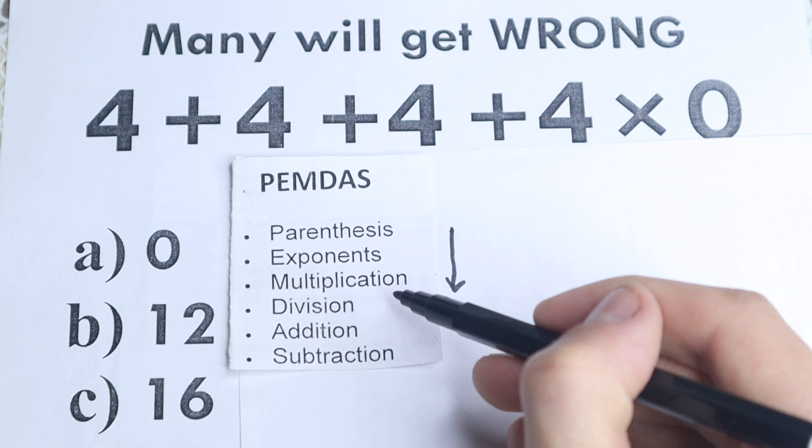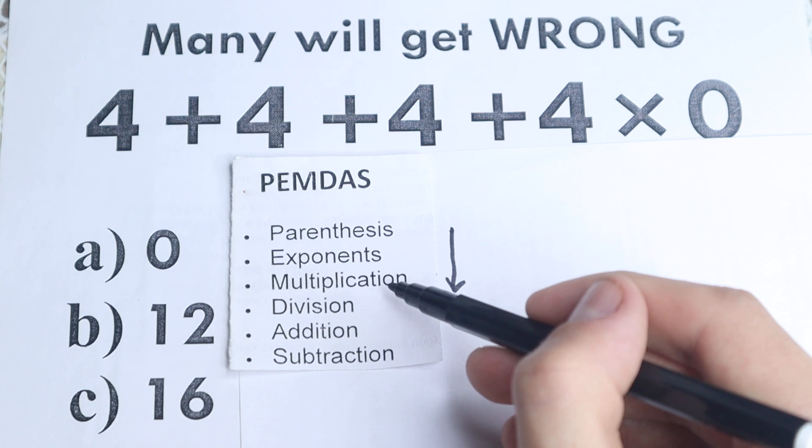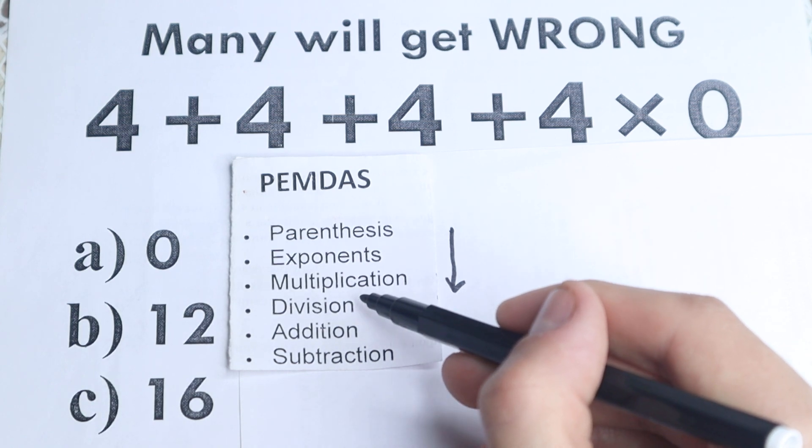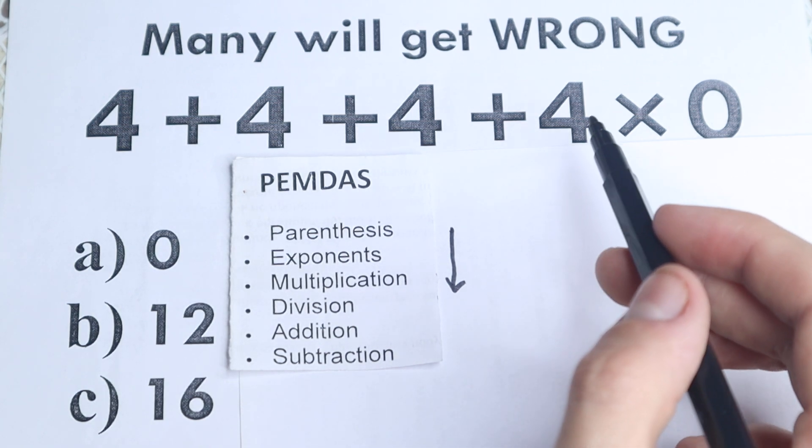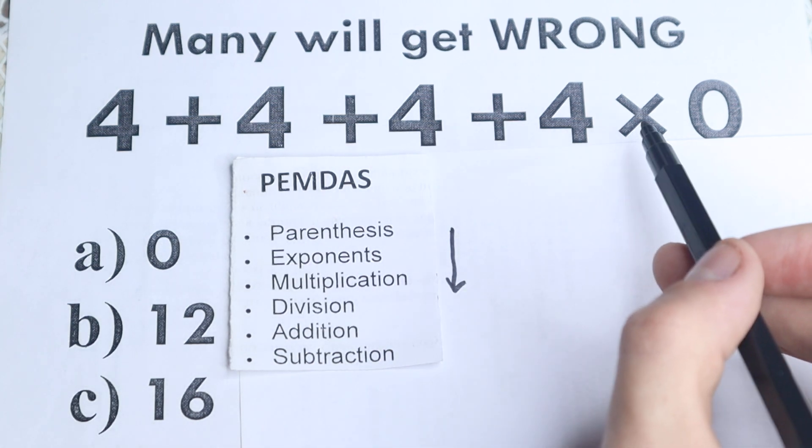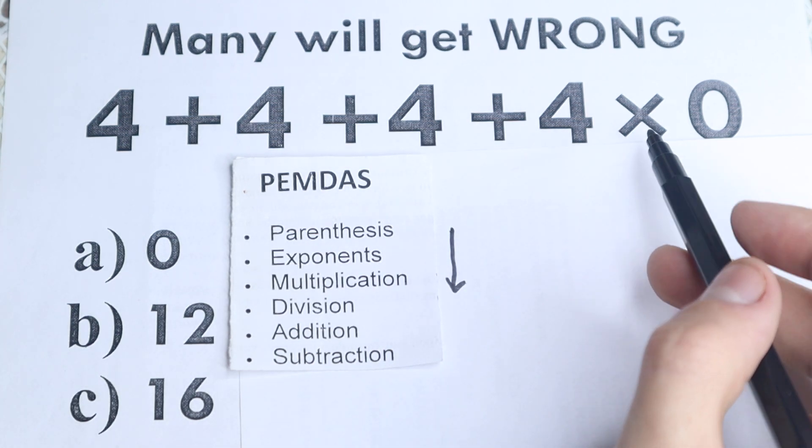The next step we have multiplication, but this is main common mistake right here because you think that the third step is multiplication, but we need to add to this step division. So this is as a group. Multiplication and division. And let's scan, are there any multiplication or division signs? Right here we have multiplication sign, so this is our case.